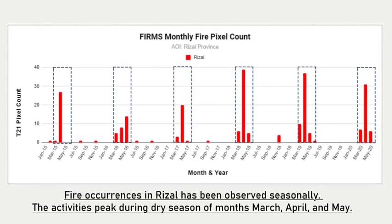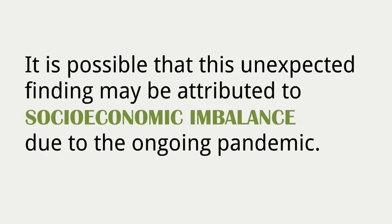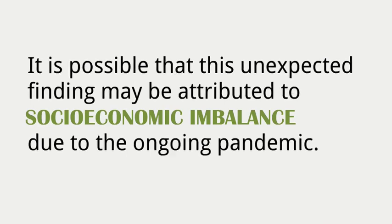Fire occurrences in Rizal have been observed seasonally, with activity peaking during the dry season months of March, April, and May. In perspective, high occurrence of fire has been recorded this year. This is unusually higher for a non-drought year, unlike 2015 and 2016 when a strong El Niño hit the Philippines. It is possible that this unexpected finding may be attributed to socioeconomic imbalance due to the ongoing pandemic.